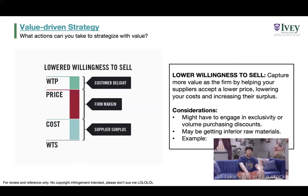Yet another option is to lower the willingness to sell — negotiate better terms from your supplier by making them more willing to accept a lower price for raw materials. You'll generally engage in exclusivity or volume purchasing discounts, giving them some incentive to lower prices. For example, if you buy all of a supplier's supply, they're probably willing to give you a lower price.